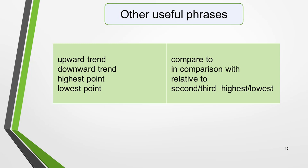Here are a few more phrases you may find useful: upward trend, downward trend, highest point, lowest point, compared to, in comparison with, relative to, and second or third highest or lowest — for example, second highest, third lowest.